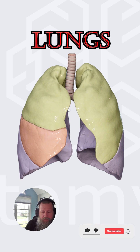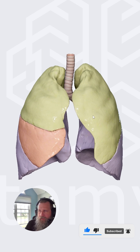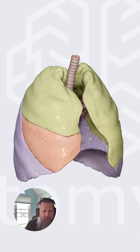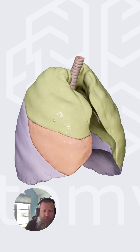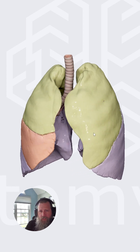Here we can see the anatomy of the lungs, and I'm using a program called Anatomy App — the link is in the description of the video. We can see that the right lung is trilobed, has one, two, three lobes, whereas the left lung is bilobed, has one, two lobes.